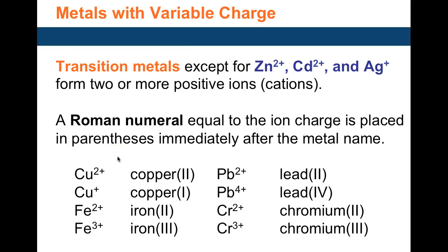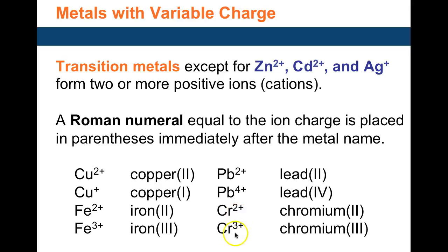For metals in the B group, they have variable charges. Copper forms copper 1+ and copper 2+. Iron forms iron 3+ and iron 2+. Lead forms a 2+ and a 4+, and chromium forms a 2+ and a 3+.